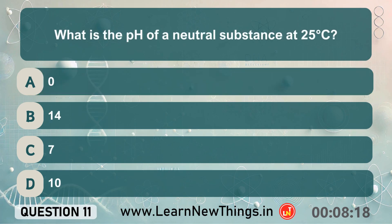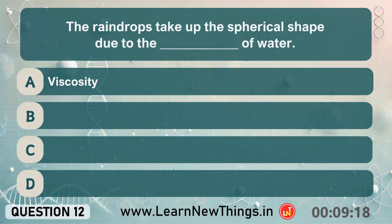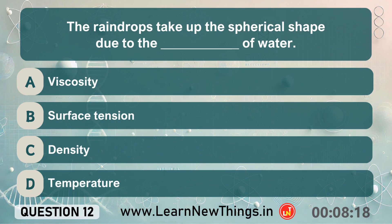What is the pH of a neutral substance at 25 degrees Celsius? Seven. The raindrops take up the spherical shape due to the dash of water? Surface tension.